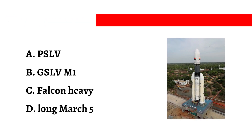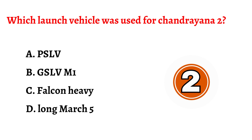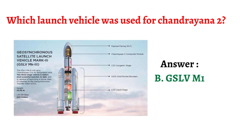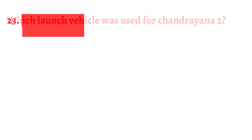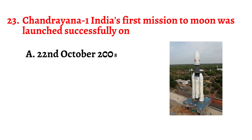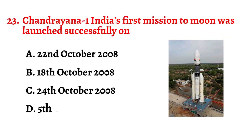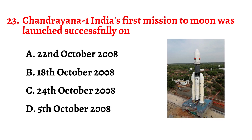Question number twenty-two: Which launch vehicle was used for Chandrayaan 2? The correct answer is option B: GSLV Mk1.